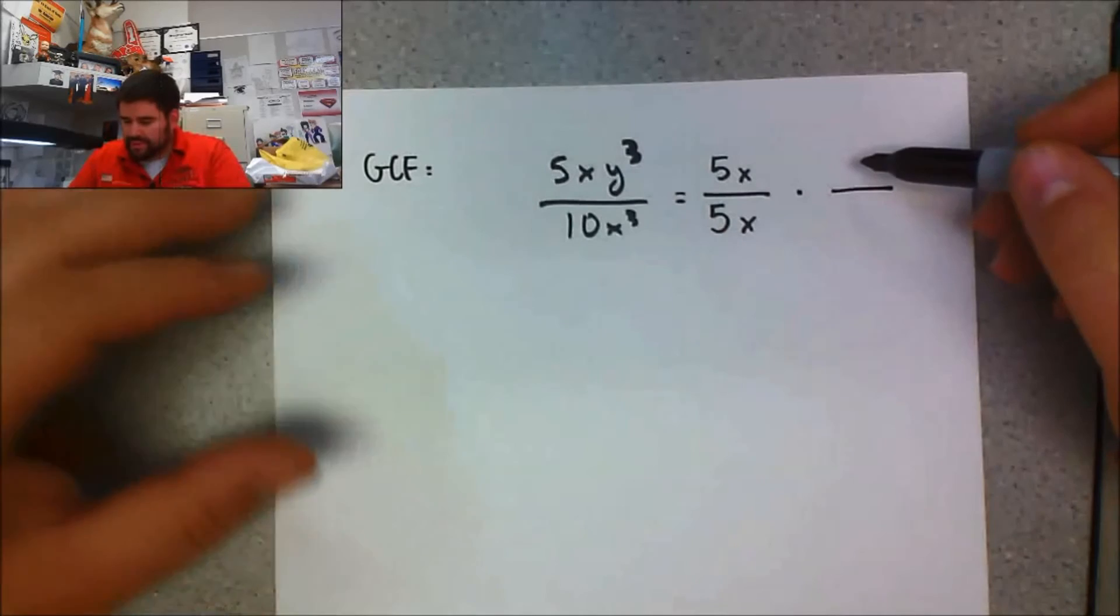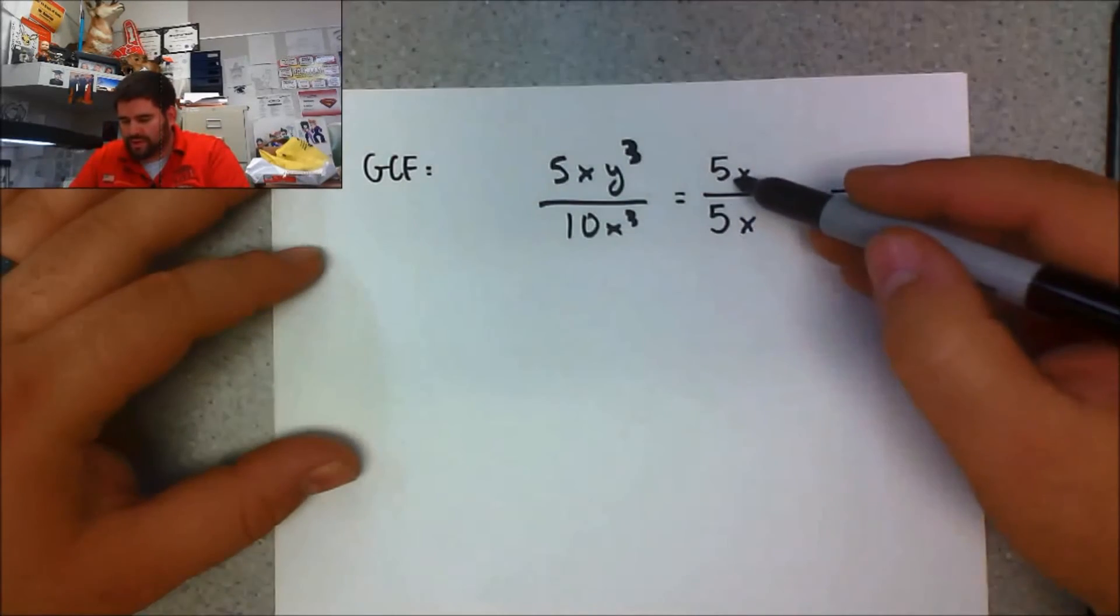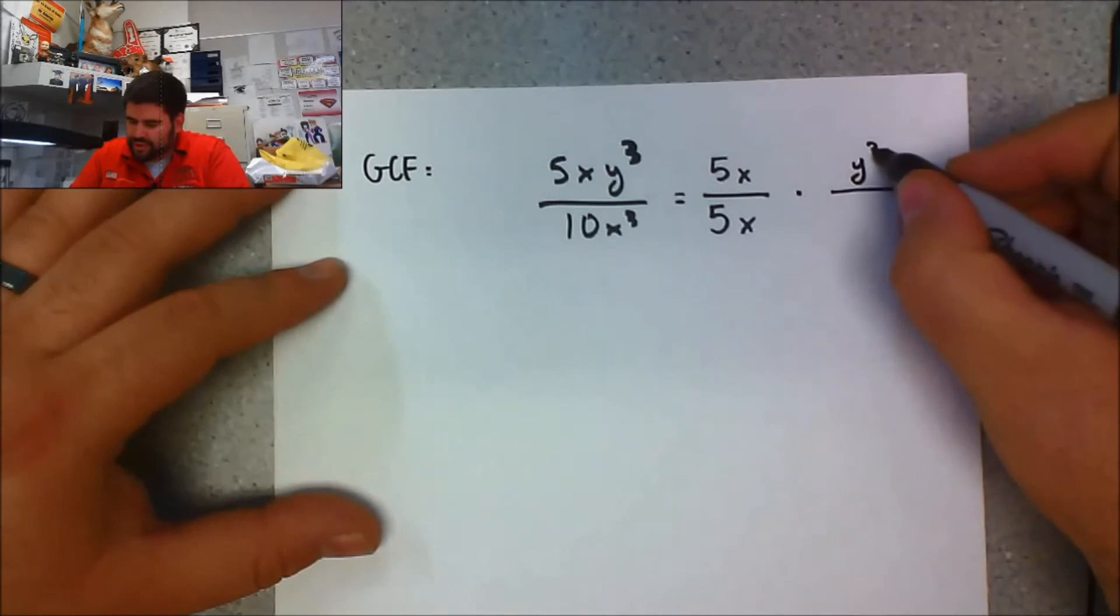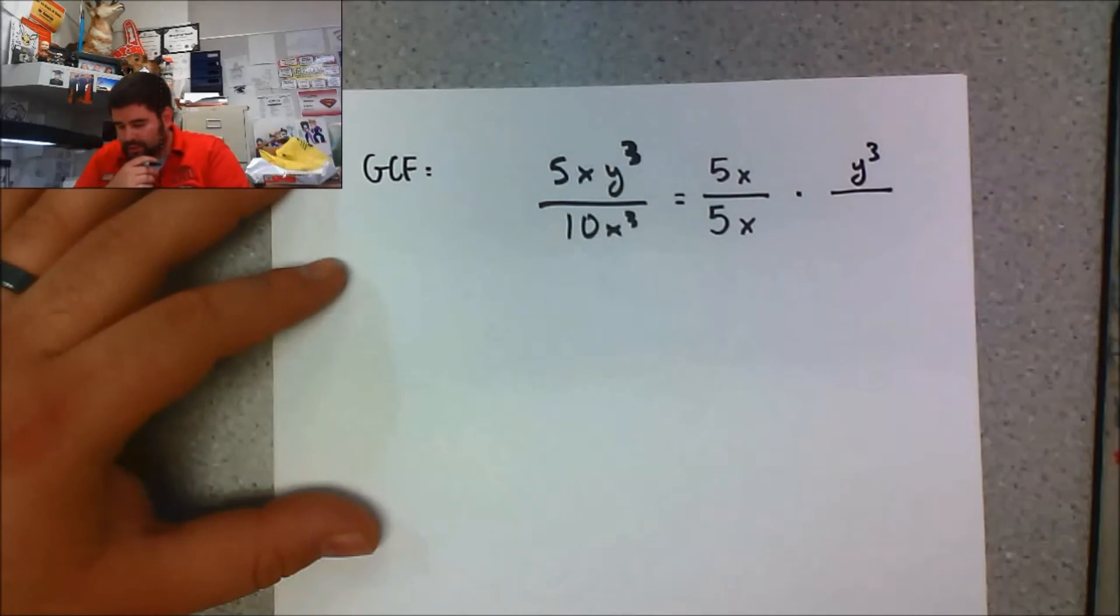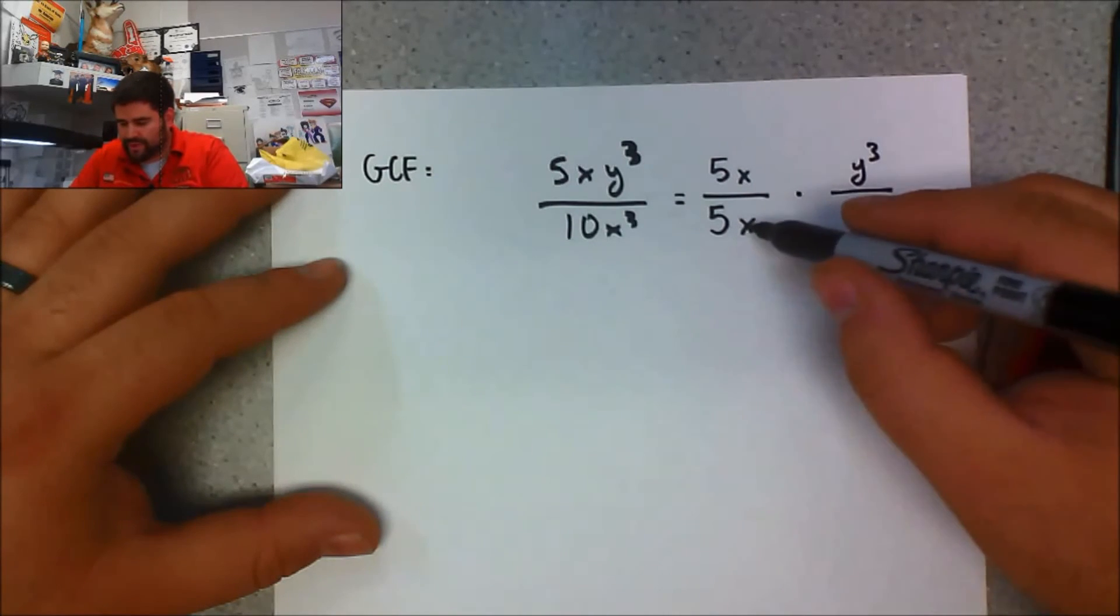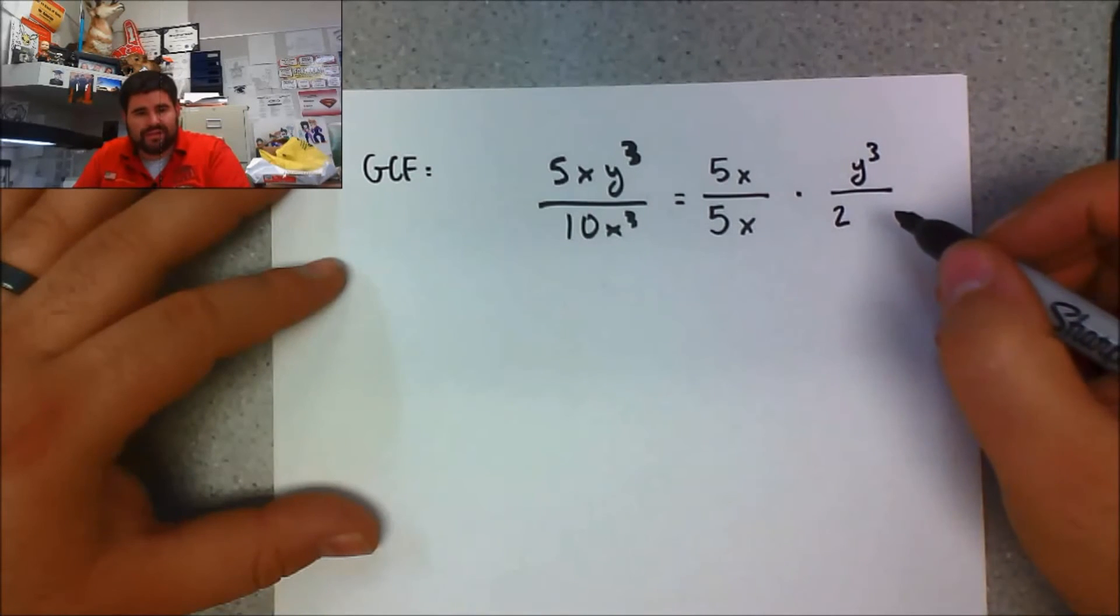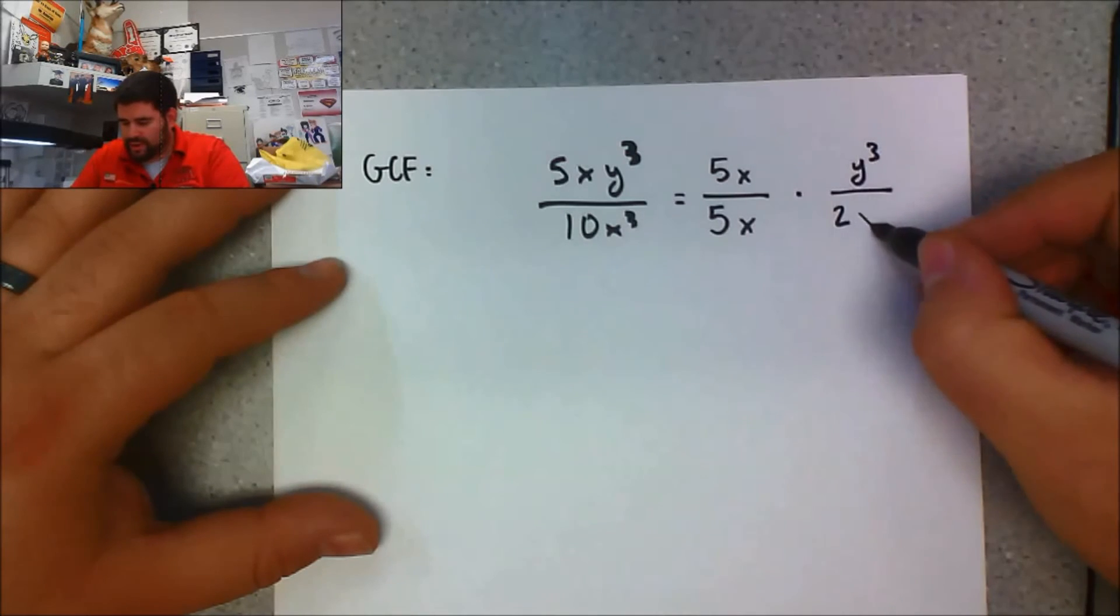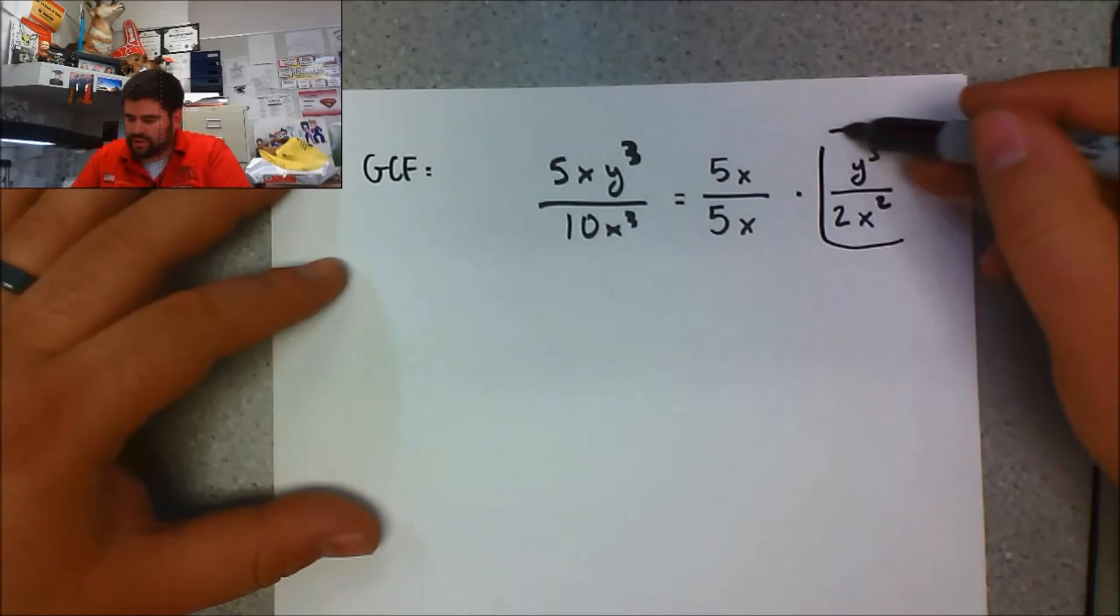Now, 5x times what equals 5xy cubed? Well, I already have the 5 and the x, so all I have left is y cubed. So y cubed times 5x gives me the top part. On the bottom, I have 10x cubed, so I need to find what I multiply by 5x to give me 10x cubed. I know 2 times 5 is 10, and I need x cubed, so x squared times x gives me x cubed.